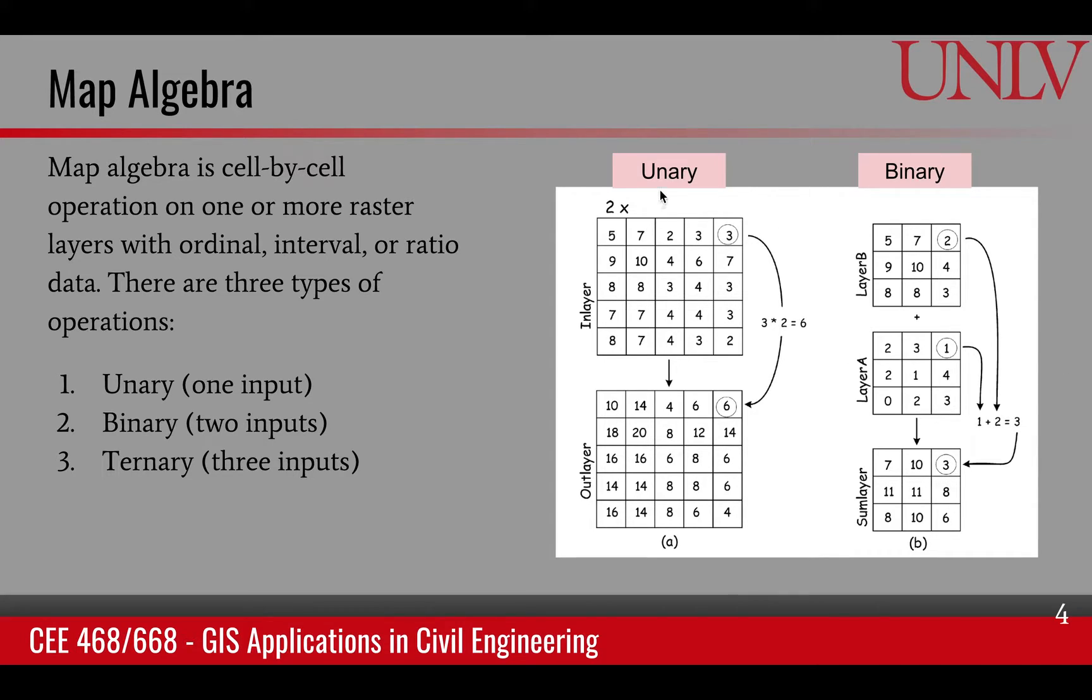Here is a unary operation. We take the raster data x and multiply it by 2, so each cell value is multiplied by 2 to create the output cell. 7 becomes 14.